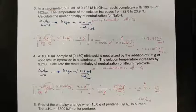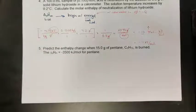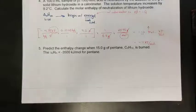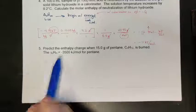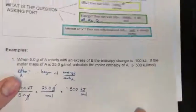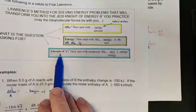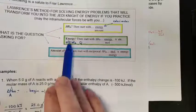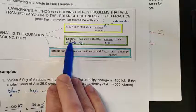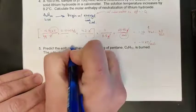Here's another example: predict the enthalpy change when 15 grams of pentane is burned. The molar enthalpy of combustion for pentane is negative 3500 kJ/mol. The question doesn't ask for molar enthalpy or an amount of pentane — it's asking for how much energy is released, so we're solving for delta H.